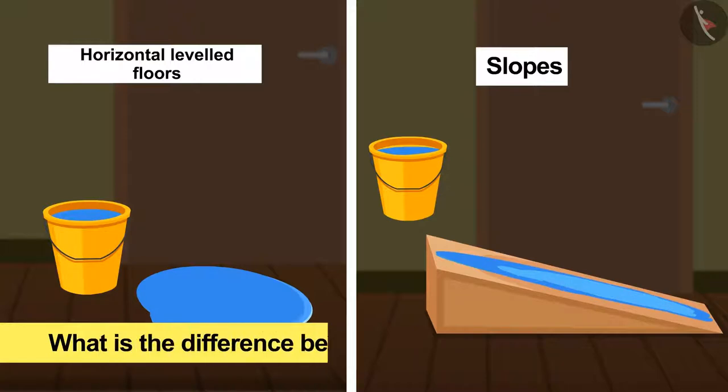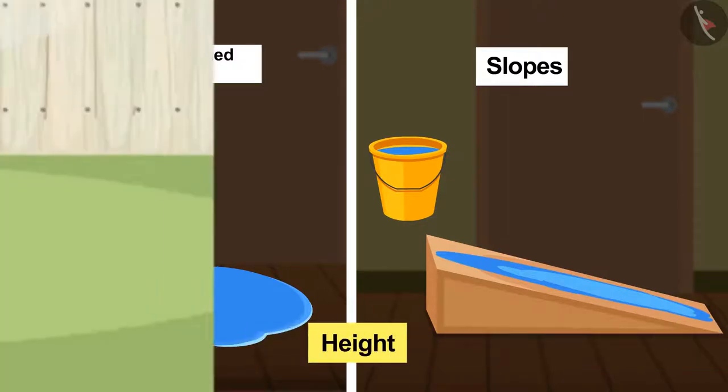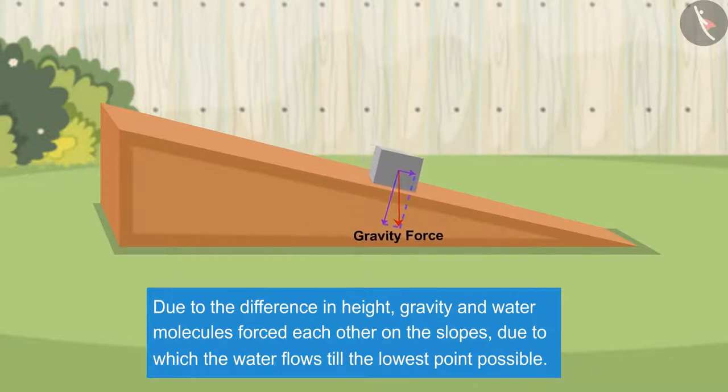So what is the difference between these two circumstances? Yes, you got it right. Height. Due to the difference in height, gravity and water molecules force each other on the slopes, due to which the water flows till the lowest point possible.